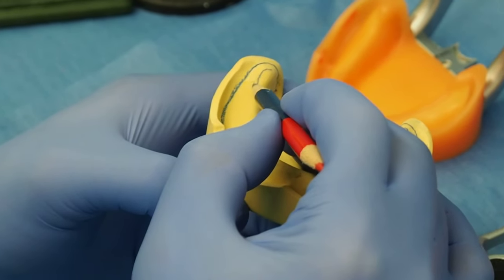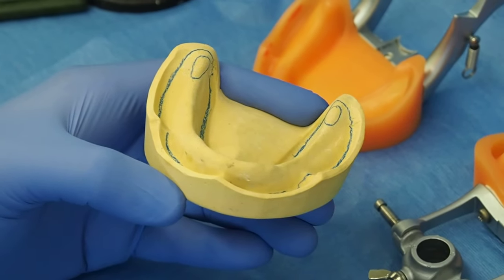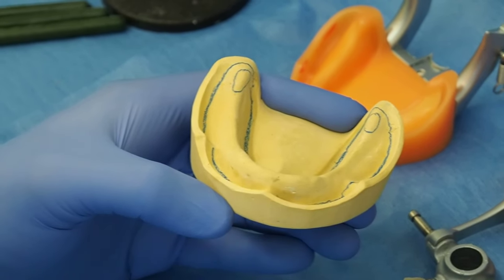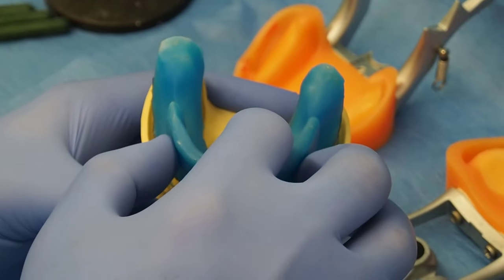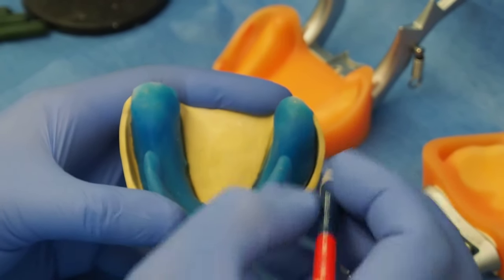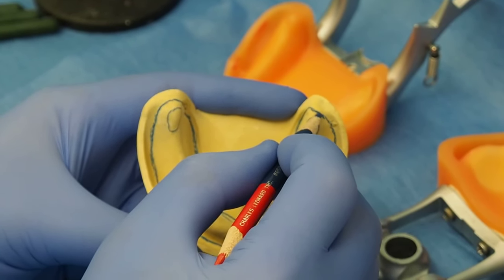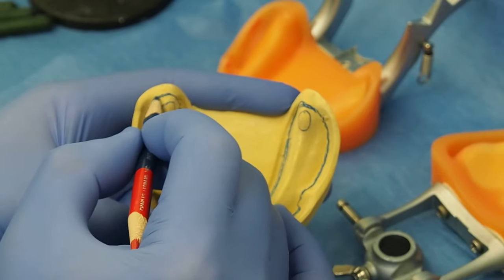We'll see two protuberances right here that will guide us when we're setting up the teeth. As far as for now, I want this custom tray covering all the way to the back.